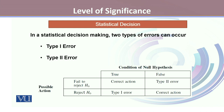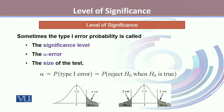Type 1 error is when we reject H0 when H0 is true. On the other hand, type 2 error is failing to reject H0 when H0 is false. The level of significance is the probability of committing type 1 error. It is also called the significance level, alpha error, or size of the test.